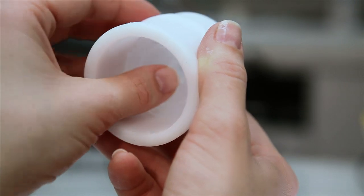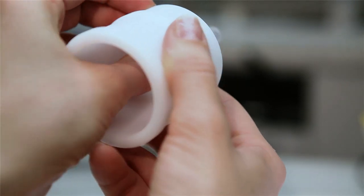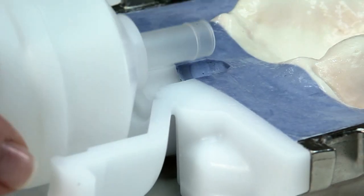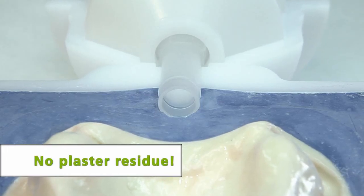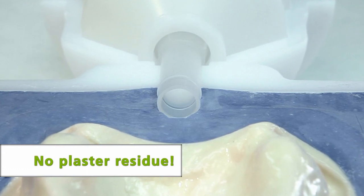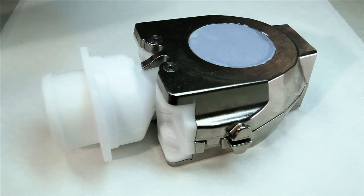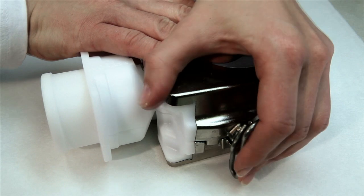Press the IvoBase funnel into the centering insert until it stops and place it in the lower flask half. Make sure that no plaster residue remains in the injection area. Now lock the two flask halves with the locking clasps.